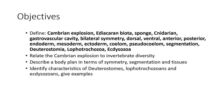Be able to relate the Cambrian explosion to invertebrate diversity. Describe a body plan in terms of symmetry, segmentation, and tissues, and identify characteristics of deuterostomes, Lophotrochozoans, and Ecdysozoans. Give examples.